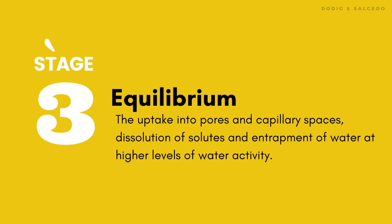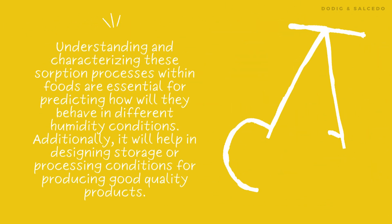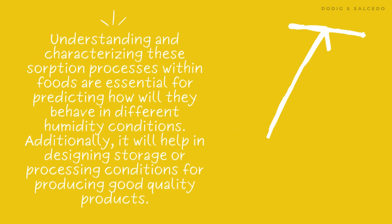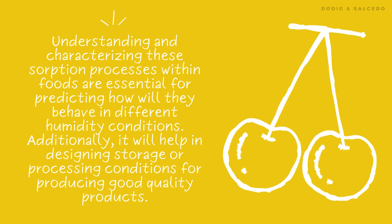Stage 3 is the stage of equilibrium, involving uptake into pores and capillary spaces, dissolution of solutes, and entrapment of water at higher levels of water activity. As the material interacts with its environment, it tends to reach a state where these different mechanisms are in balance. Eventually, the material reaches a point where the rate of moisture adsorption equals the rate of moisture desorption, and the material is considered to be at equilibrium with its surroundings. Understanding and characterizing these sorption processes within foods are essential for predicting how they will behave in different humidity conditions, and will help in designing storage or processing conditions for producing good quality products.